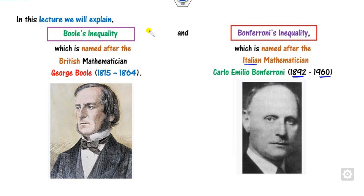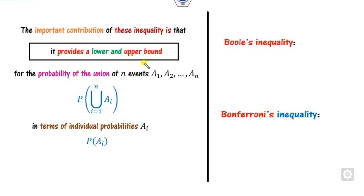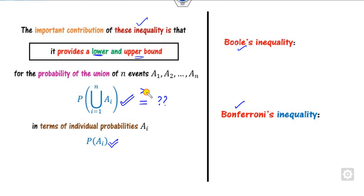What is the theme of these two inequalities, and why is there a need for them? The major contribution of these inequalities, whether Boole's or Bonferroni's, is that they provide the lower and upper bounds for the probability of their unions with respect to their individual probabilities.